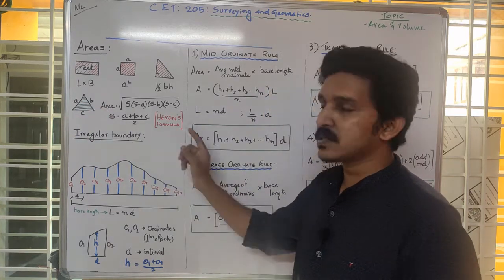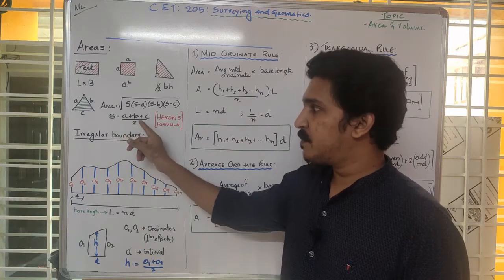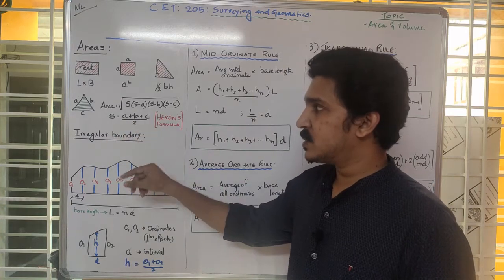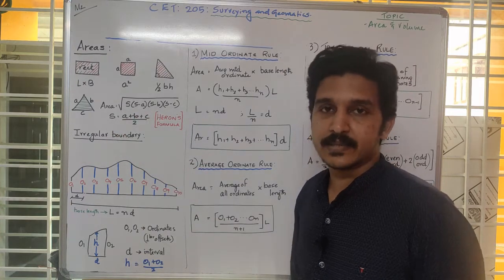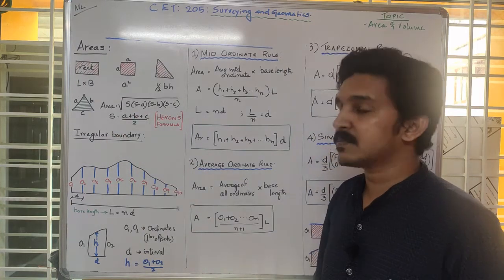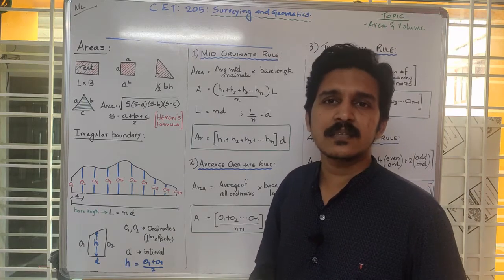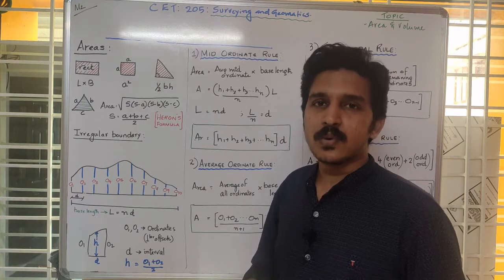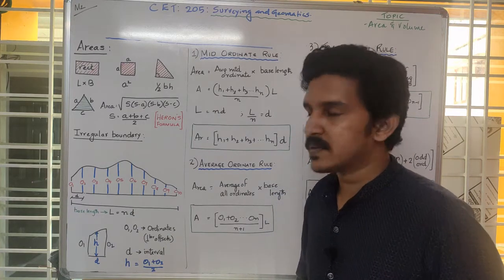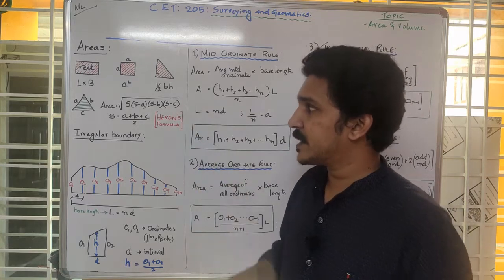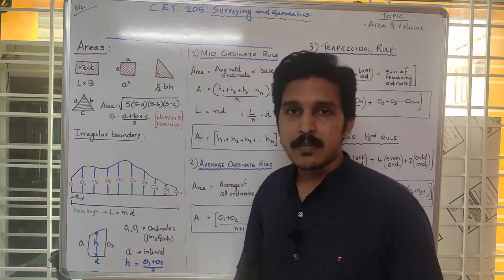For that, we can use Heron's formula. S is equal to A plus B plus C divided by 2, and area is given by the square root of S into S minus A into S minus B into S minus C. We have studied this in our schooling to find out area using Heron's formula.